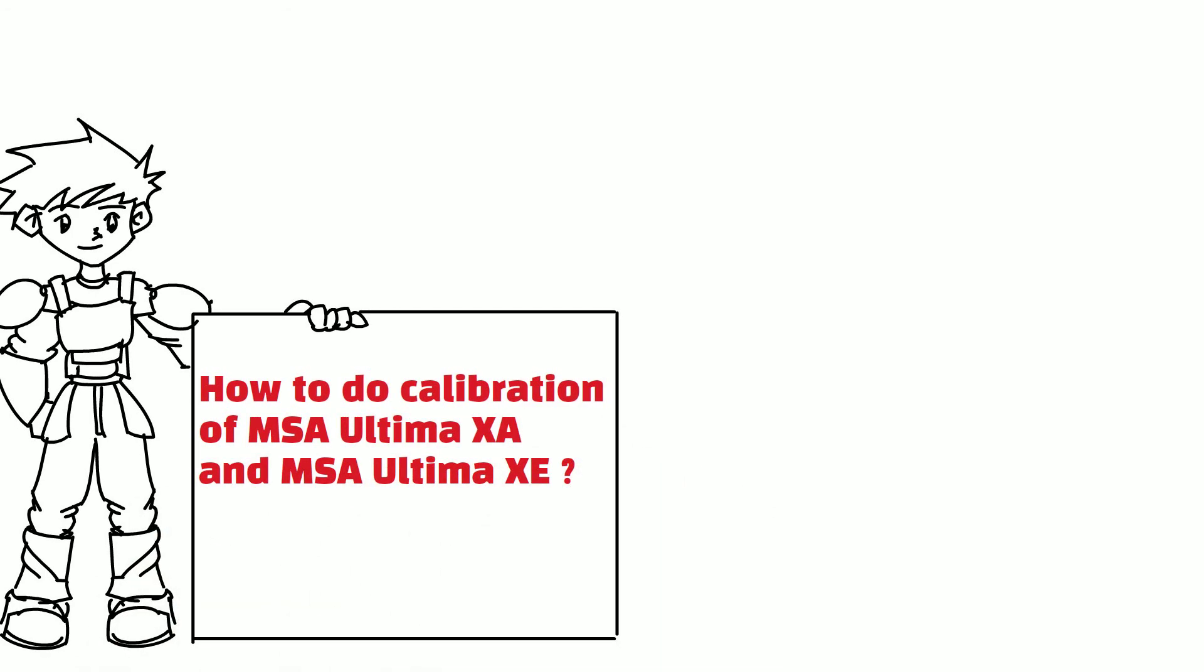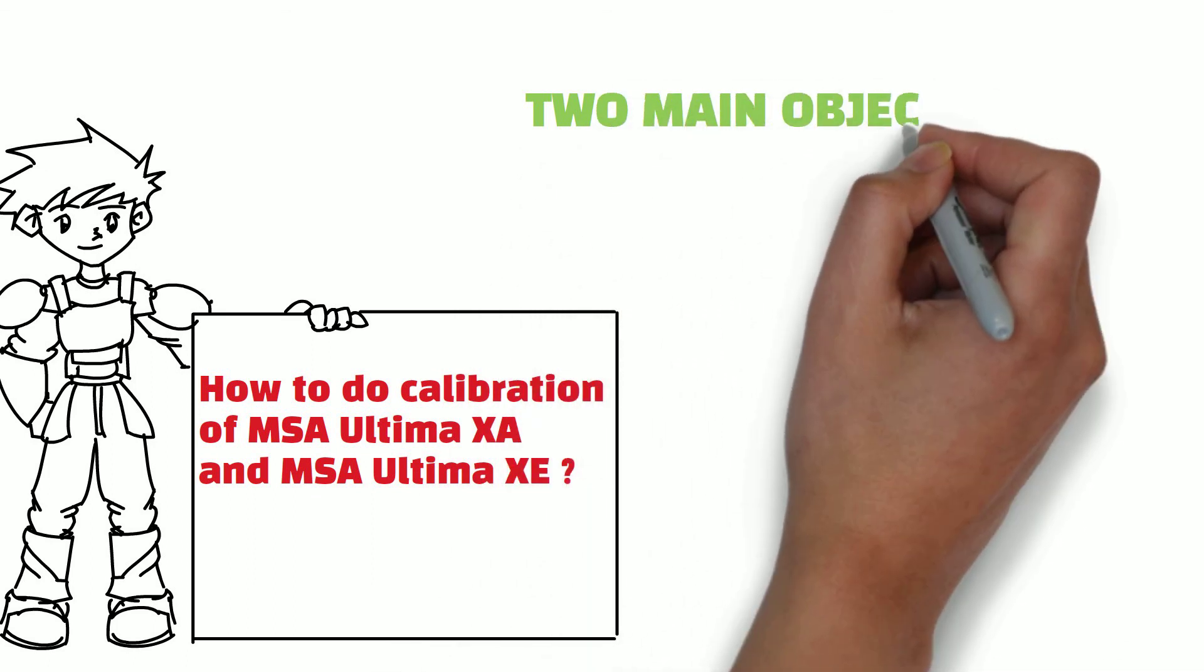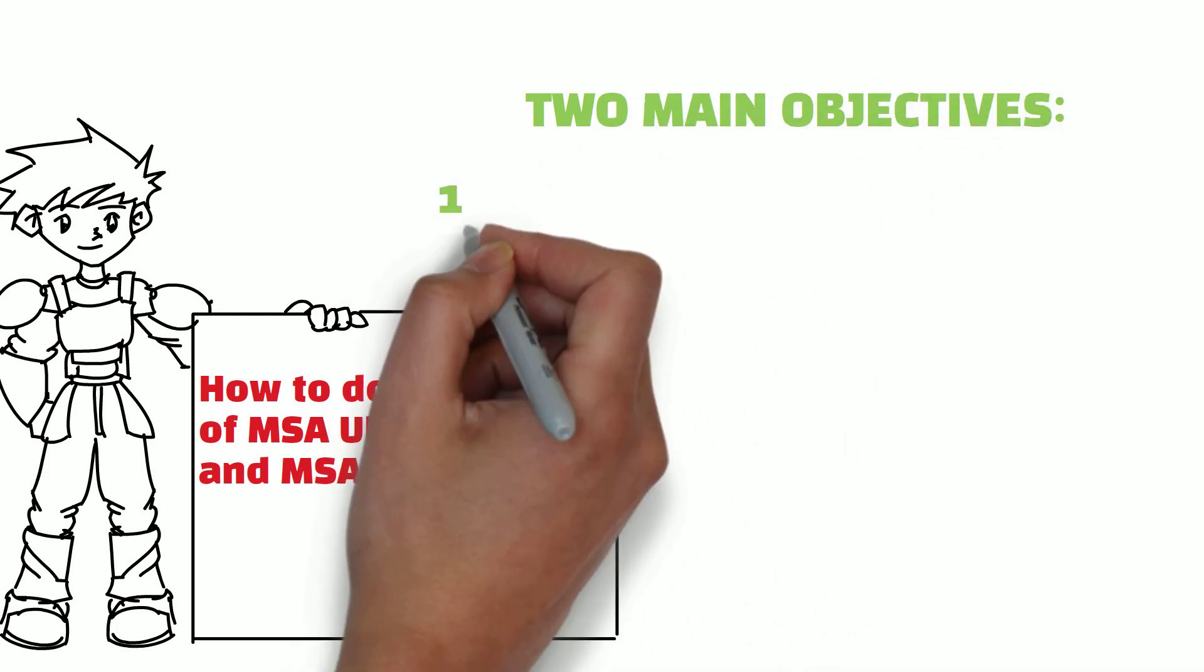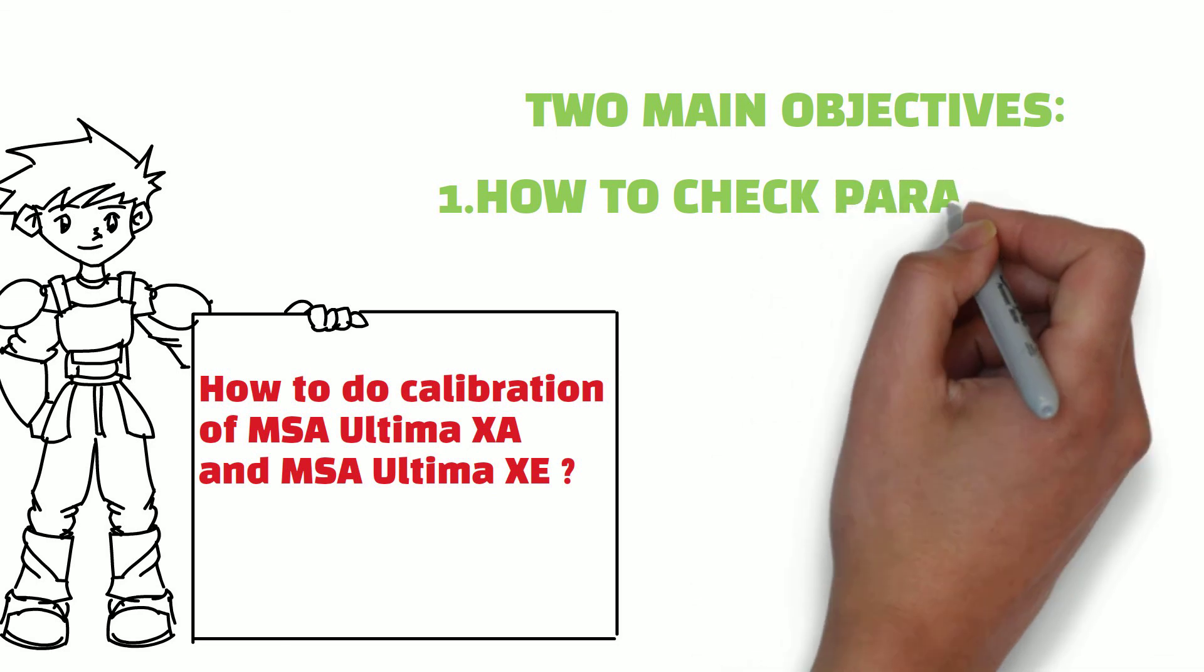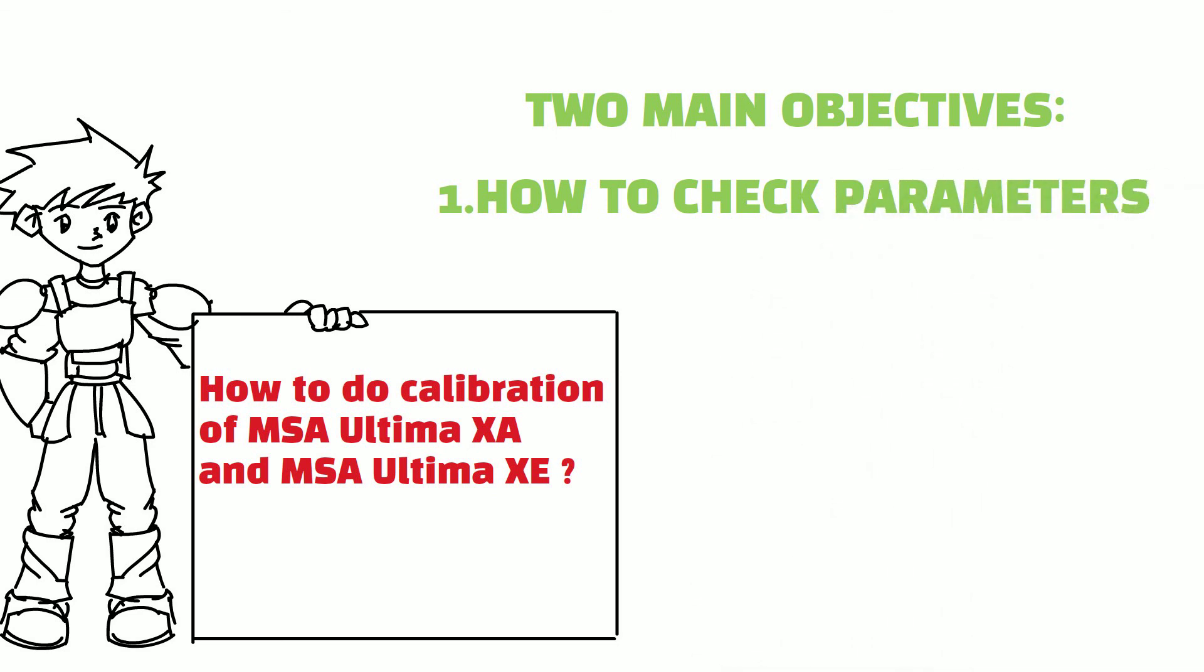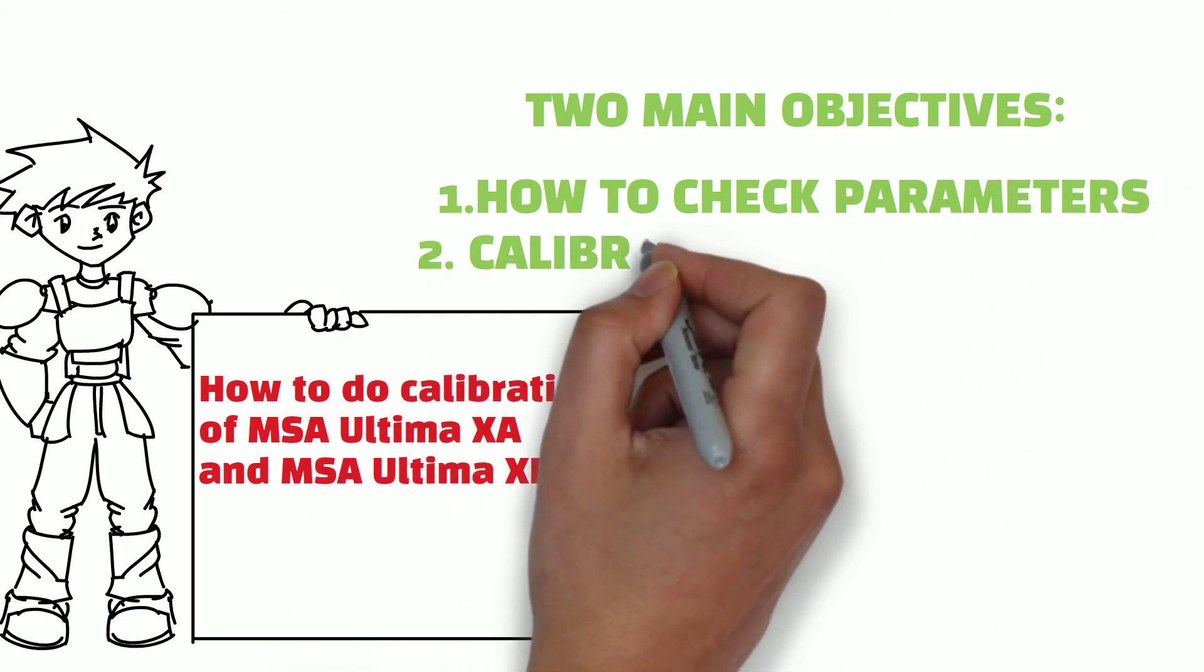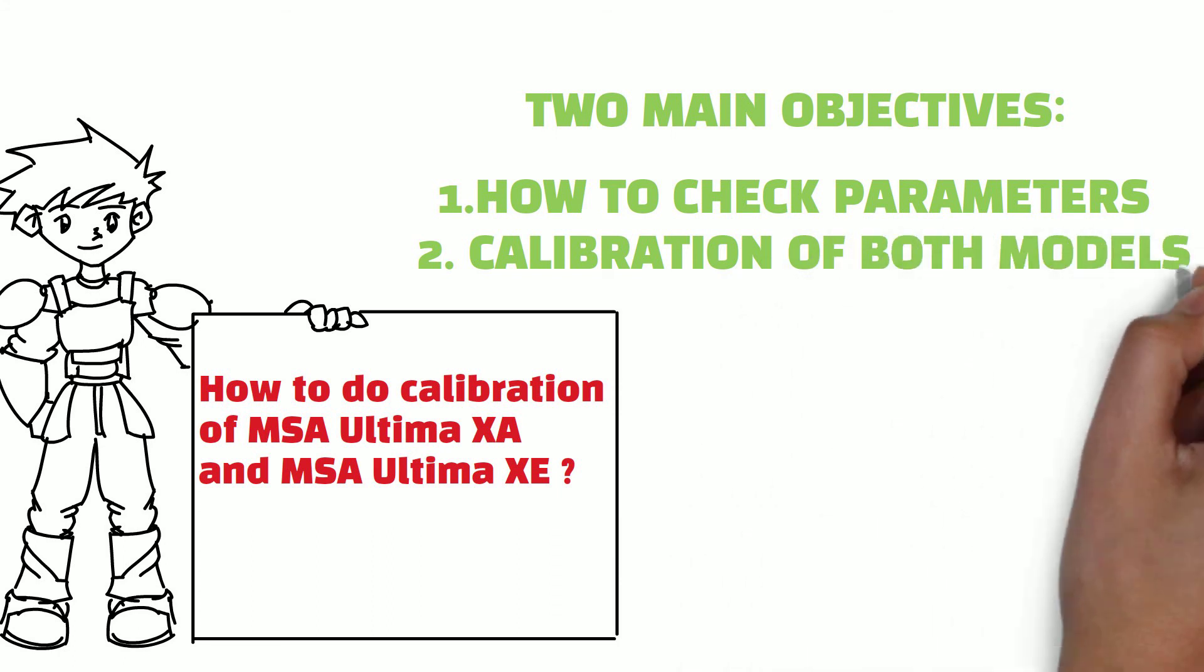There are two main objectives of this video. First objective is how to check parameters in Ultima XA and Ultima XE. Second objective is how to do calibration of both models.